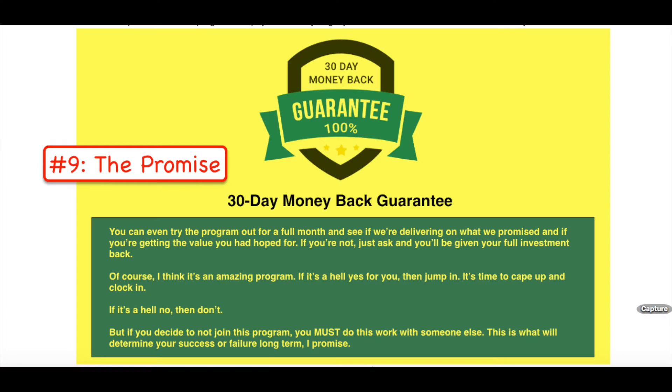And then element number nine is to take away the risk by offering a money back guarantee. The most common objection people have is money. I don't want to waste money. I don't want to lose money. I don't want to spend money on something and then have it not work again. So let's just remove all that and say, hey, if it doesn't work out for you in 30 days or 60 days or 90 days or whatever time frame you want to give, I'll give you all your money back. So there's really no risk for you to say yes.